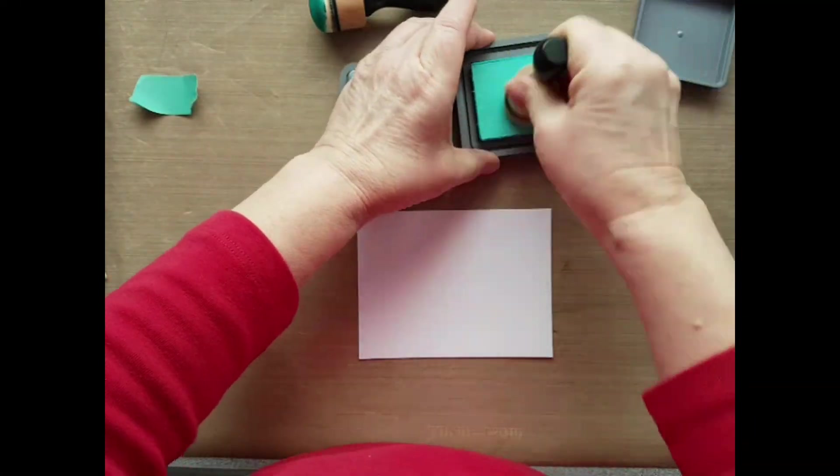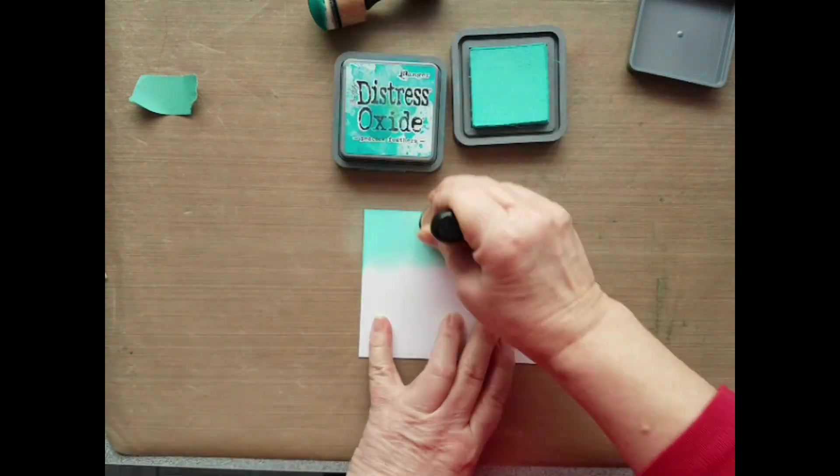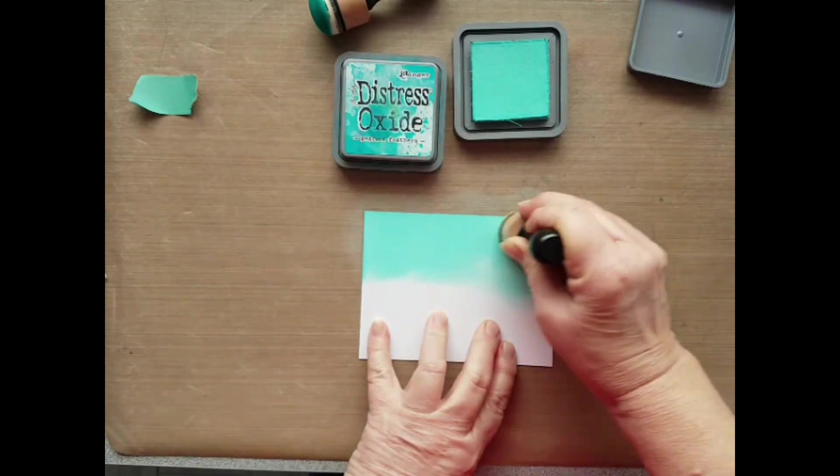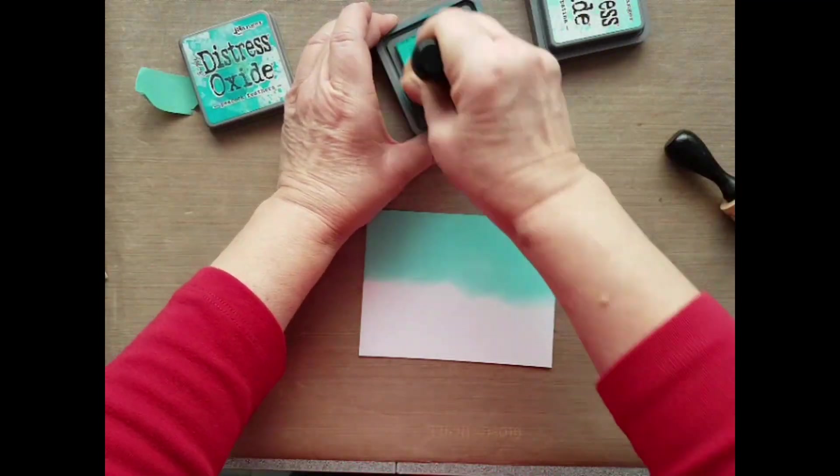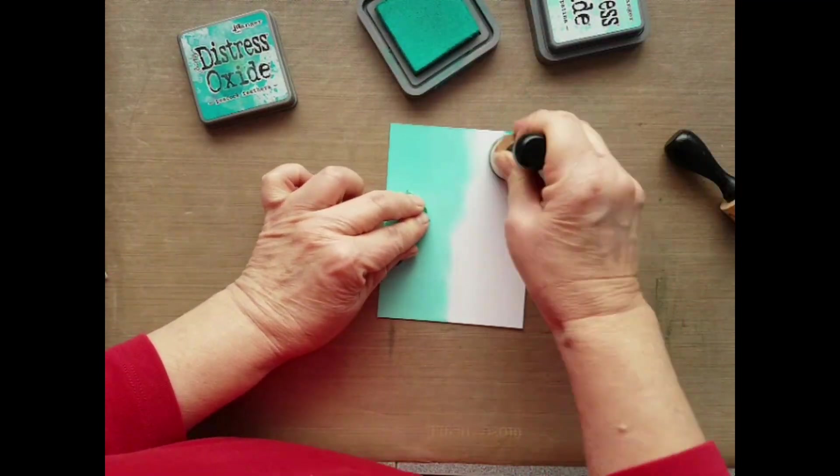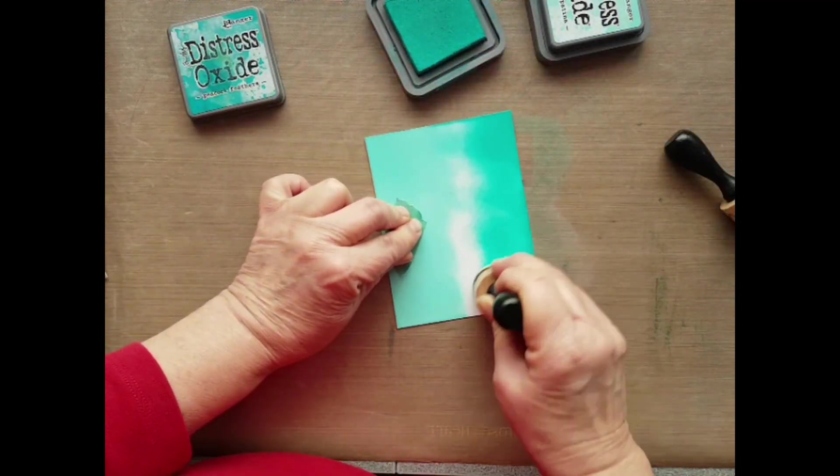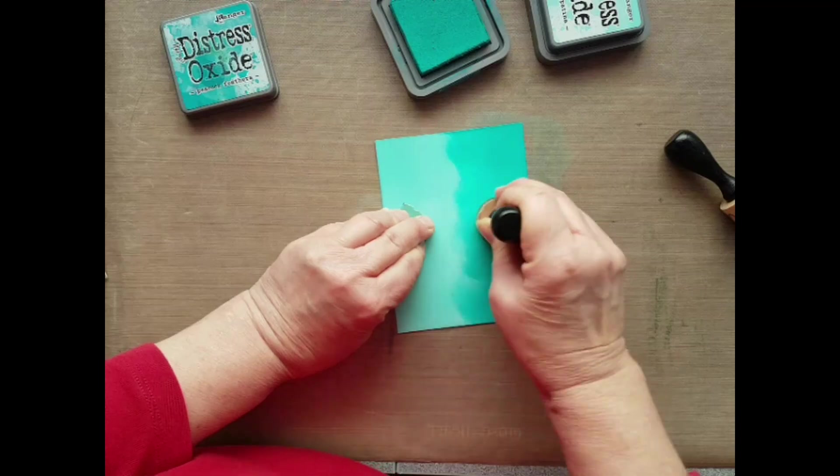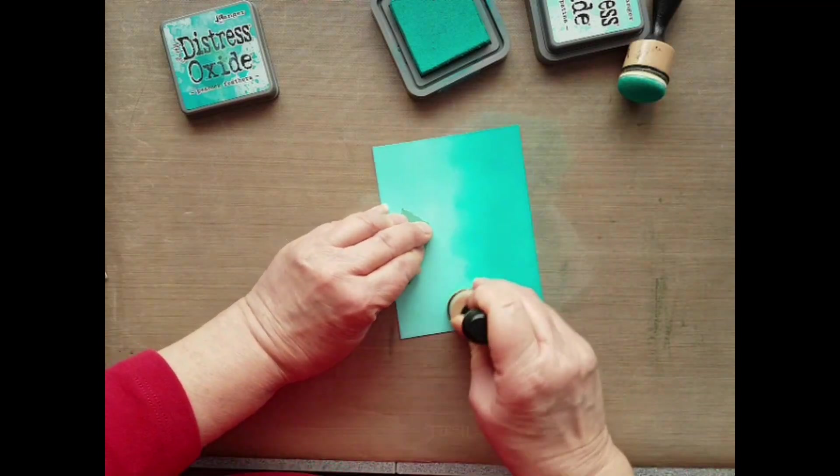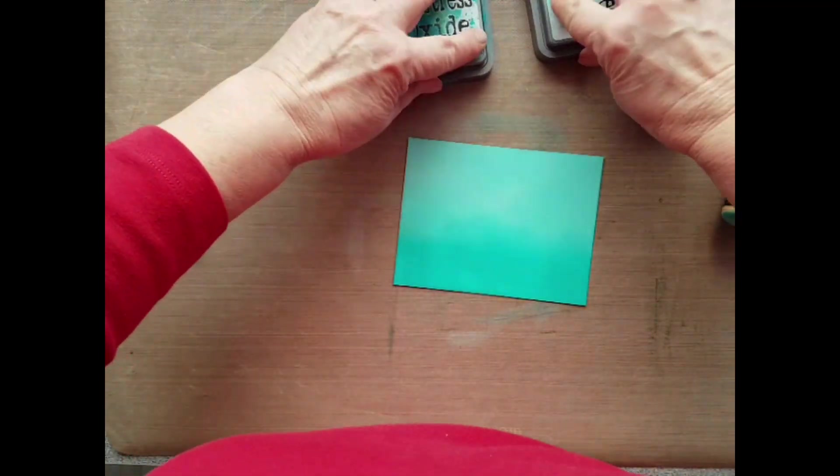Using Distress Oxide Salvaged Patina, blend with a blending brush on one half of white cardstock. Then take Peacock Feathers and blend the other side of the white cardstock. Blend together, bring back your Salvaged Patina and blend in the center. Leave this to dry or use a heat tool to dry it before stamping.